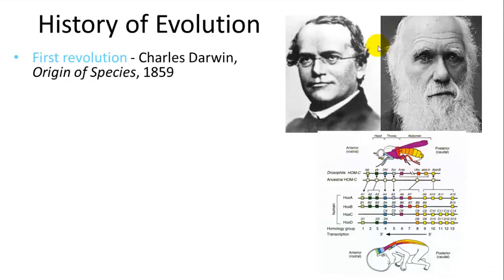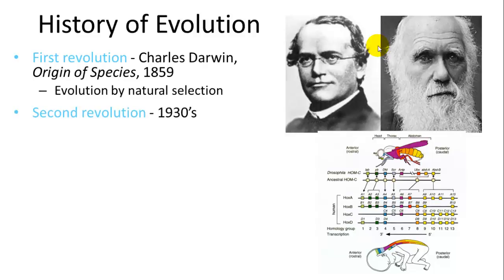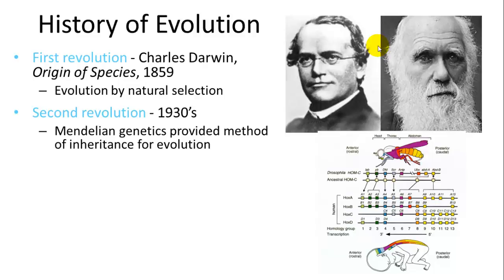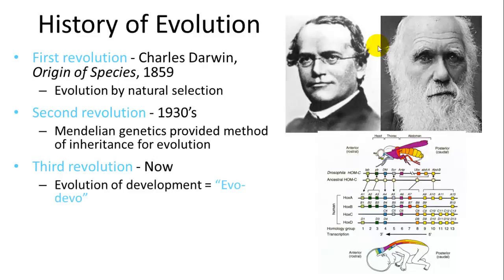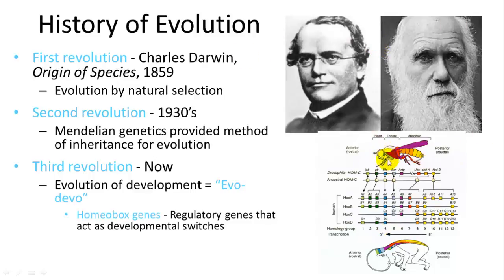Evolution was first proposed by Darwin, but faced resistance until the 1930s, when a second revolution occurred: Mendelian genetics provided a mechanism of inheritance, giving genes that could be selected for or against certain traits. We're now in a third revolution focused on development — genes that control the development of organisms, studied through evo-devo.